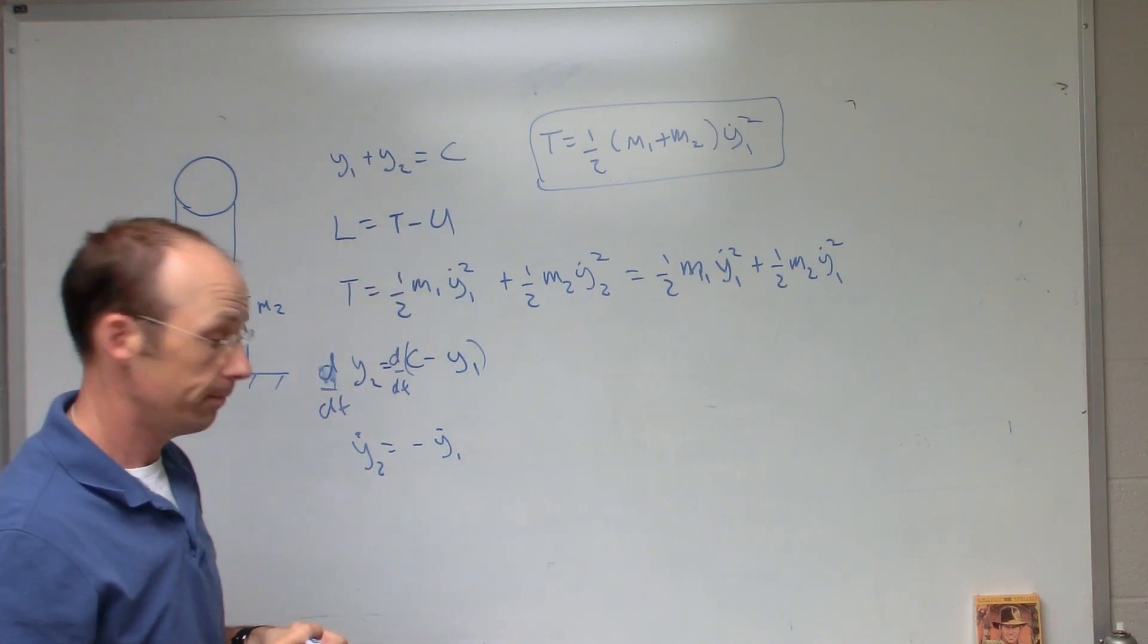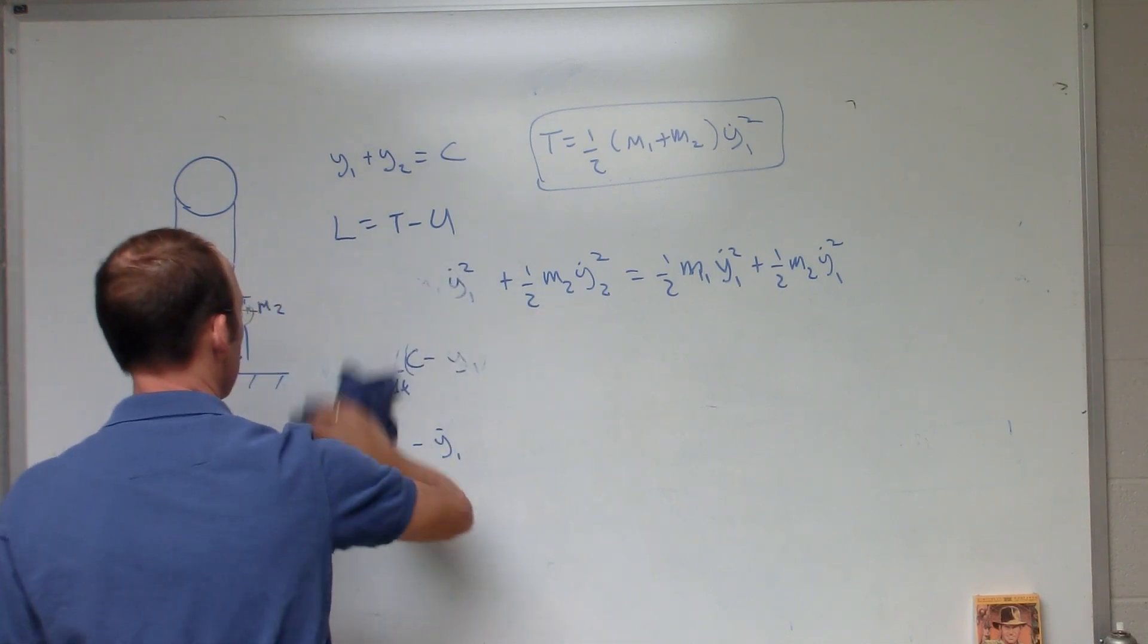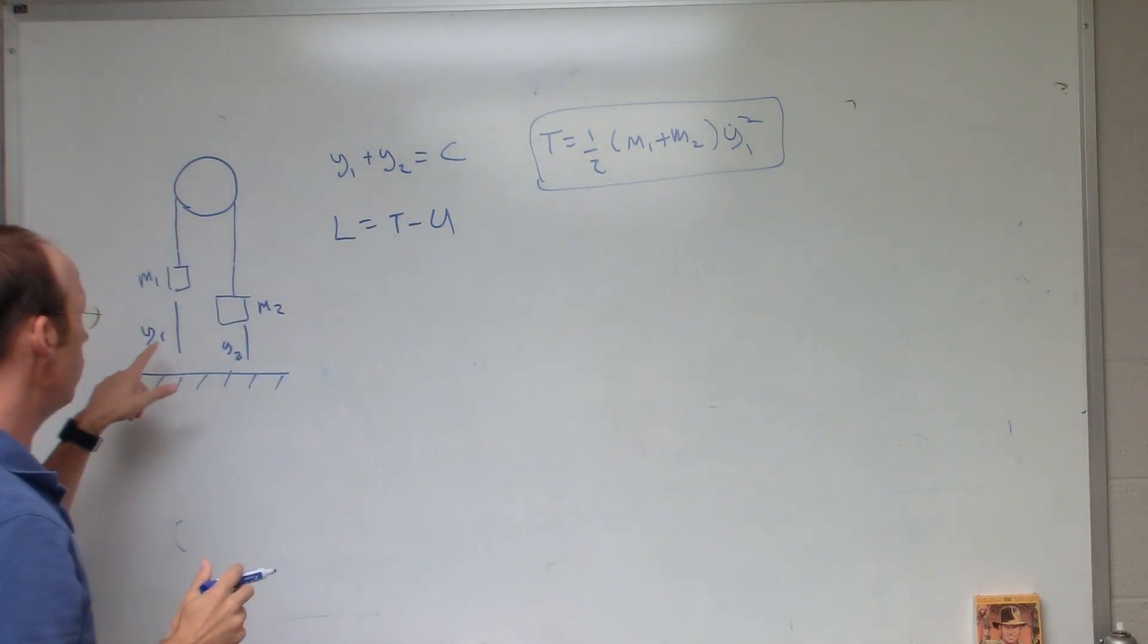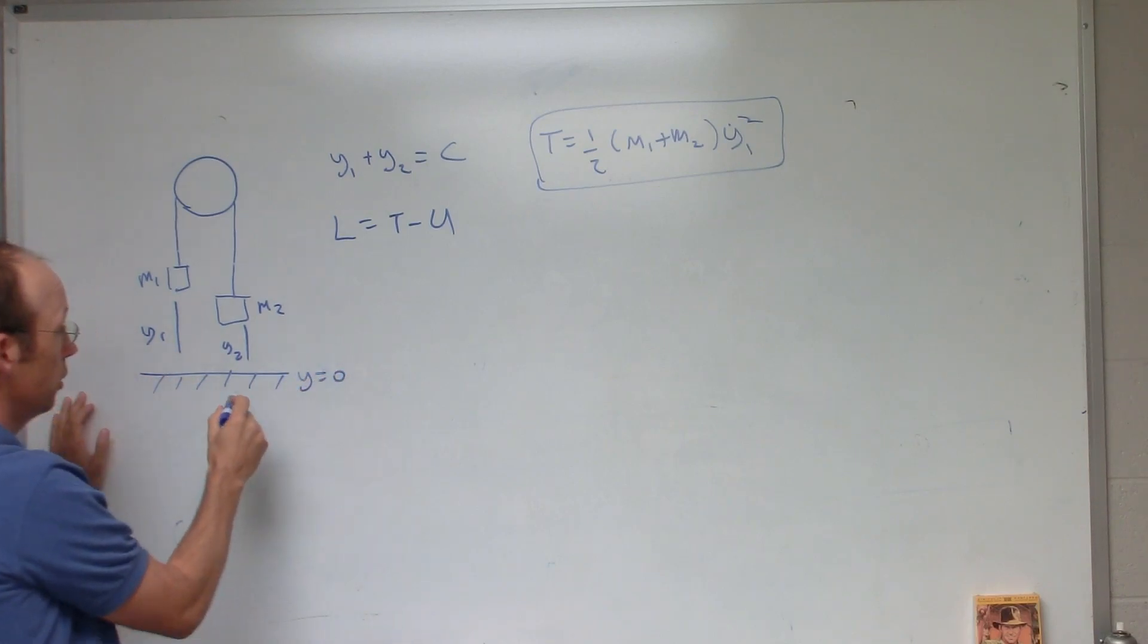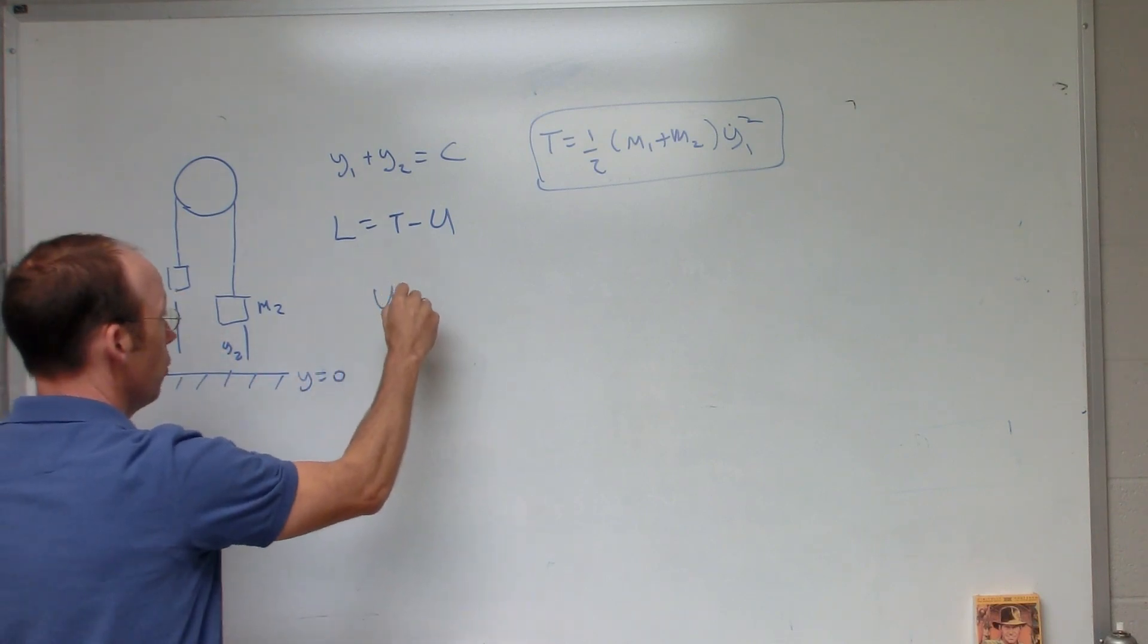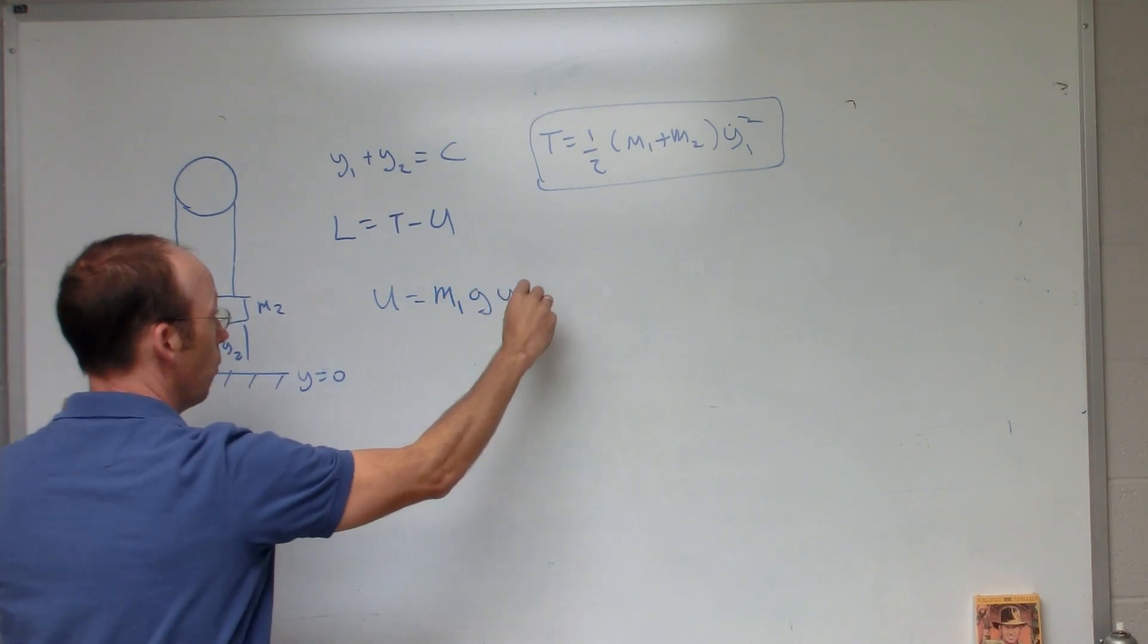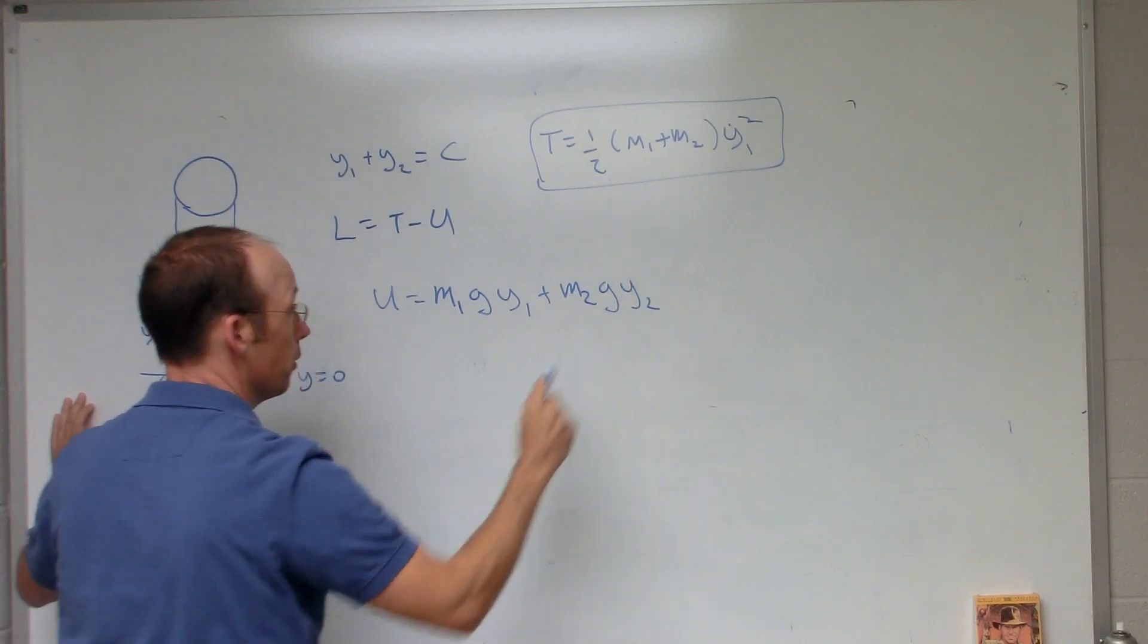Now we need the potential. So let me erase this. So now for the potential, I can say this is Y equals zero. So the potential is going to be the potential of that one plus that one. So U equals M1 G Y1 plus M2 G Y2.